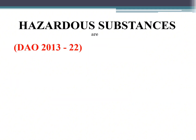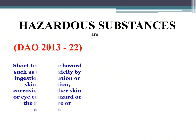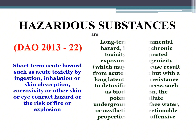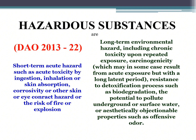Hazardous substances are: long-term environmental hazards including chronic toxicity upon repeated exposure, carcinogenicity, resistance to detoxification processes such as biodegradation, the potential to pollute underground or surface water, or aesthetically objectionable properties such as offensive odor.